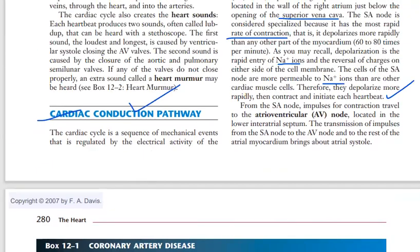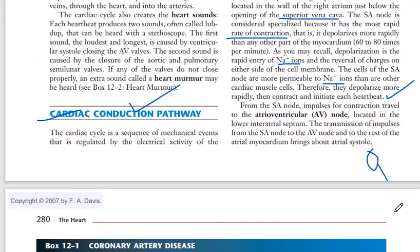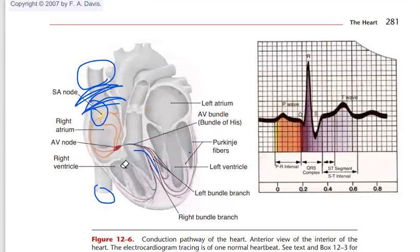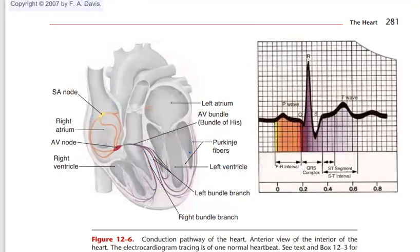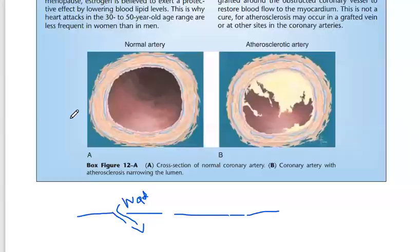Next we have another node — the AV node. The SA node generates the impulse and the AV node collects the impulse. It is located in the lower atrial septum. The transmission of impulse from the SA node to the AV node and the rest of the atrial myocardium brings about atrial systole — the contraction of the atria begins.